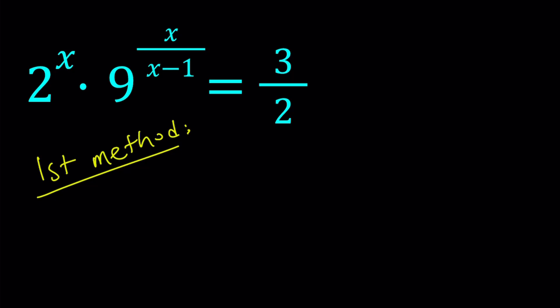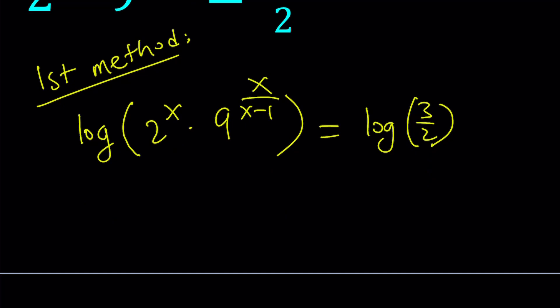So let's go ahead and log both sides. Why? Because that way you'll be able to bring down the exponents. And the exponents are variables so it will be a good thing to do. Log 2 to the power of x times 9 to the power of x over x minus 1 equals log 3 over 2. Of course you have to log both sides. You can't just do it on one side.